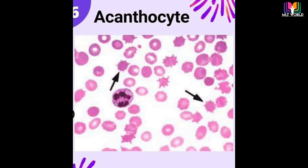Next is acanthocytes, also called spur cells. They are dense, shrunken, and irregularly shaped RBCs with spikes on the outside, and these cells form from changes in the fat and protein on the red blood cells' outer layer. Most adults have a small number of acanthocytes in their blood. Acanthocytes are found in people having severe liver disease and other diseases like malnutrition and hypothyroidism.